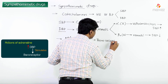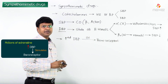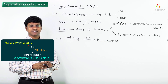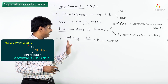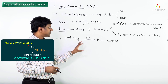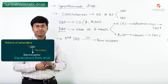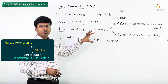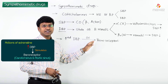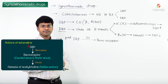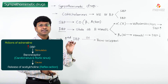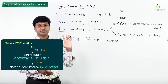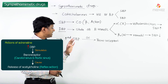Where are these baroreceptors present? These baroreceptors are present on the carotid sinus and the aortic sinus. Whenever the diastolic blood pressure is increased, that will stimulate the baroreceptors. This stimulation of the baroreceptors will cause the release of acetylcholine — this is called baroreceptor-mediated release of acetylcholine, which is nothing but a reflex action.